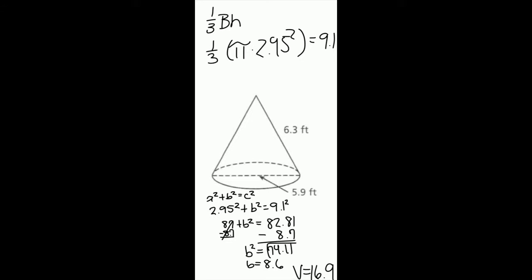Finally, subtract both sides by 8.7 and you get b² equals 74.11. Find the square root and you get b equals 8.6.